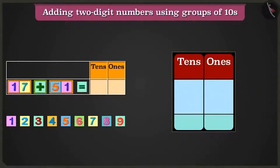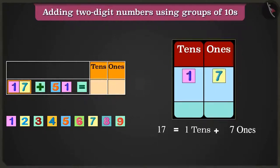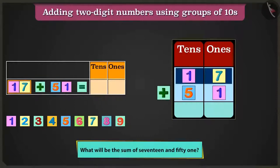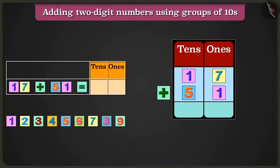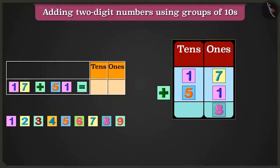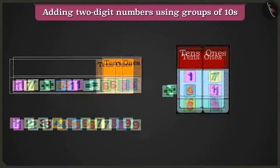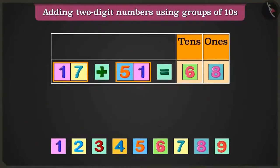Let me explain. We have to add seventeen and fifty-one. Seventeen is one-ten and seven-ones, along with fifty-one that are five-tens and one-ones. First of all, we will add the numbers in the box of ones. Seven-ones plus one-ones will equal eight-ones. So we will write eight in the ones place. Now we will add the numbers in the box of tens. One-ten added to five-tens will equal six-tens. We will write six in the tens place. So seventeen and fifty-one added up to six-tens and eight-ones, that are a total of sixty-eight.